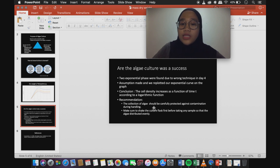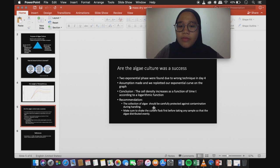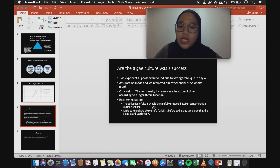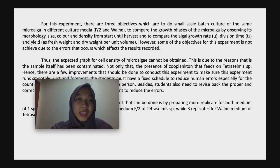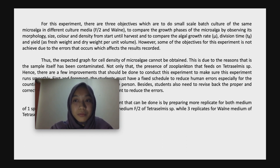The algae culture was a success. It shows that we have 2 exponential phases, found due to wrong technique on day 4, but an assumption was made and we reported our exponential curve on the graph. For the conclusion, cell density increased as a function of time according to a logarithmic function. For recommendations, the collection of algae should be carefully protected against contamination before handling, and make sure to shake the culture first before taking any sample so that the algae are distributed evenly. There are 3 objectives: to do a small-scale batch culture of the same microalgae in different culture media F2 and Walna; to compare the growth phase by observing morphology, size, color, and density from start until harvest; and to compare growth rate, division time, and yield as fresh weight and dry weight per unit volume.